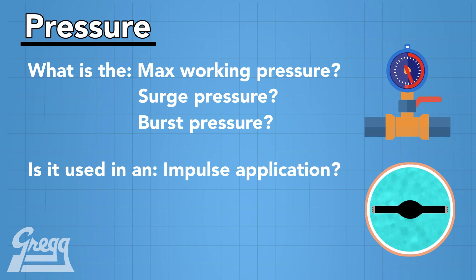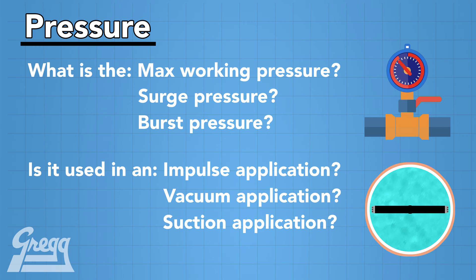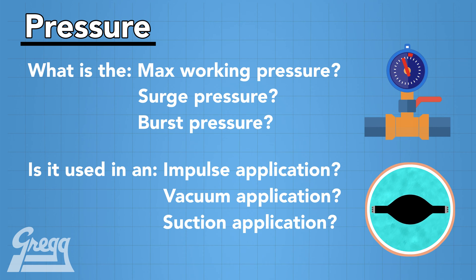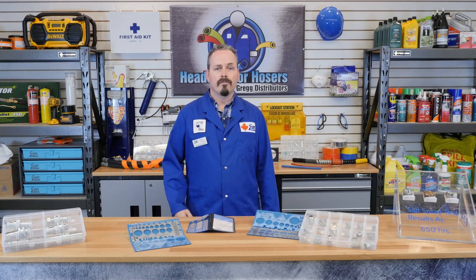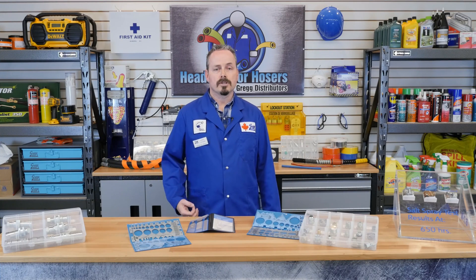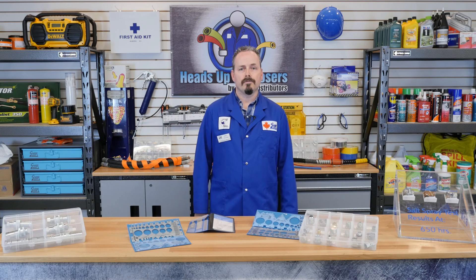Vacuum is also an important criteria to remember, and also suction. Not all hoses are rated for vacuum or suction applications. Therefore, if there is a vacuum or suction applied to the hose, it could potentially collapse the tube and the hose assembly will fail.